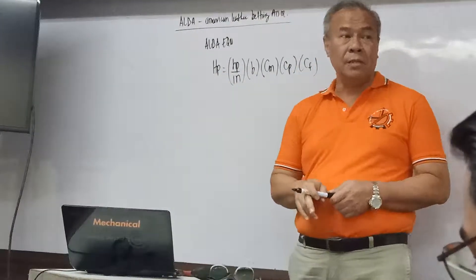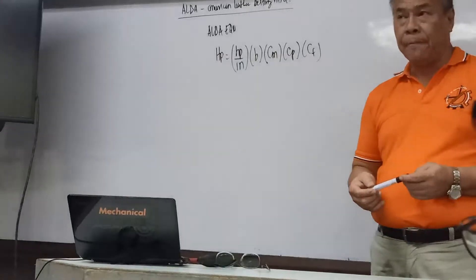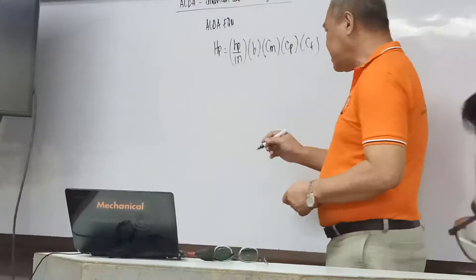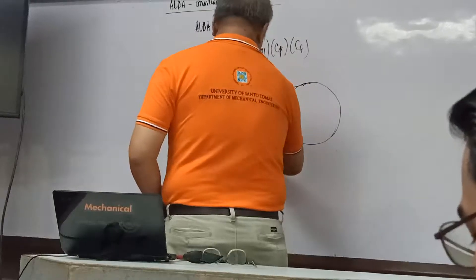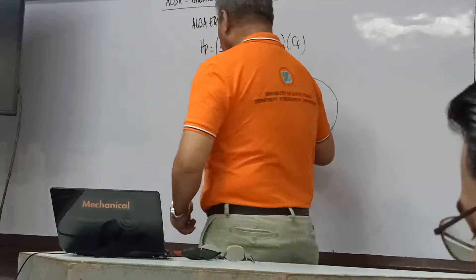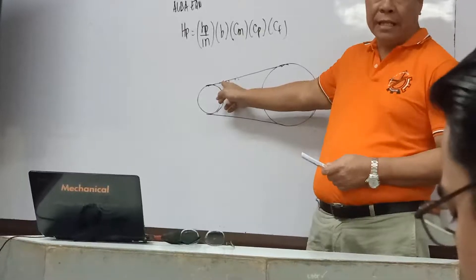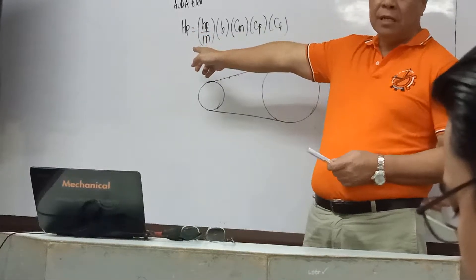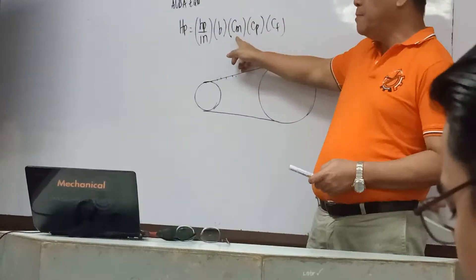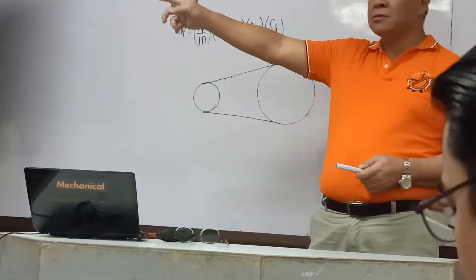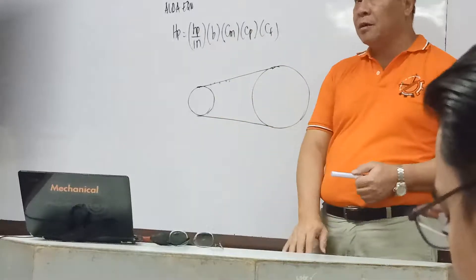The horsepower per inch represents: if I have two connecting pulleys connected by a belt, and I cut that belt into one-inch strips, how much horsepower is generated by one inch of that belt. B is the width of the belt. C_M represents the type of motor used to drive the system. C_P represents the pulley sizes. And C_M (operating condition factor) represents the operating condition — whether it's a jerky load, oil and dust wet condition, or other factors affecting belt efficiency.